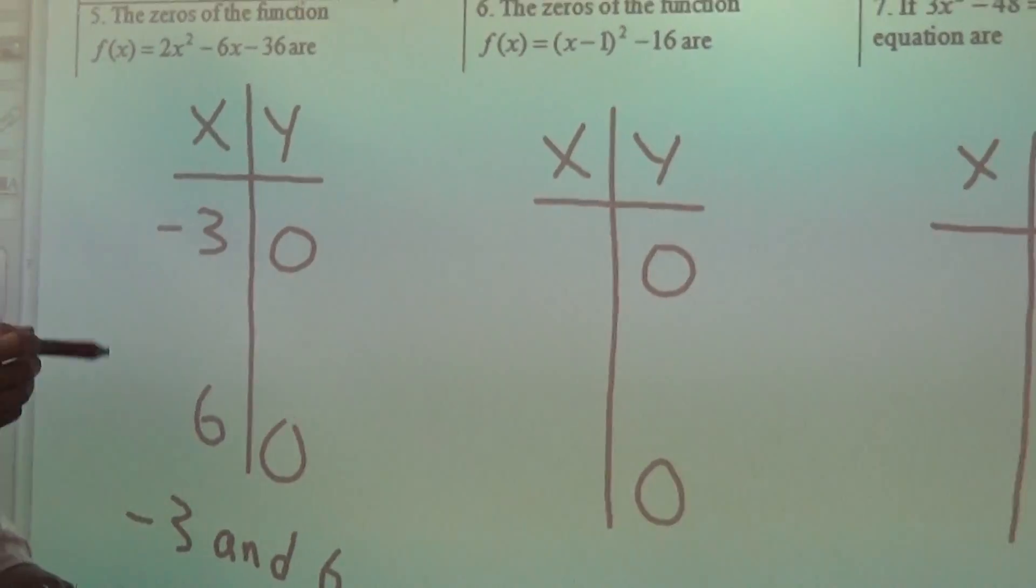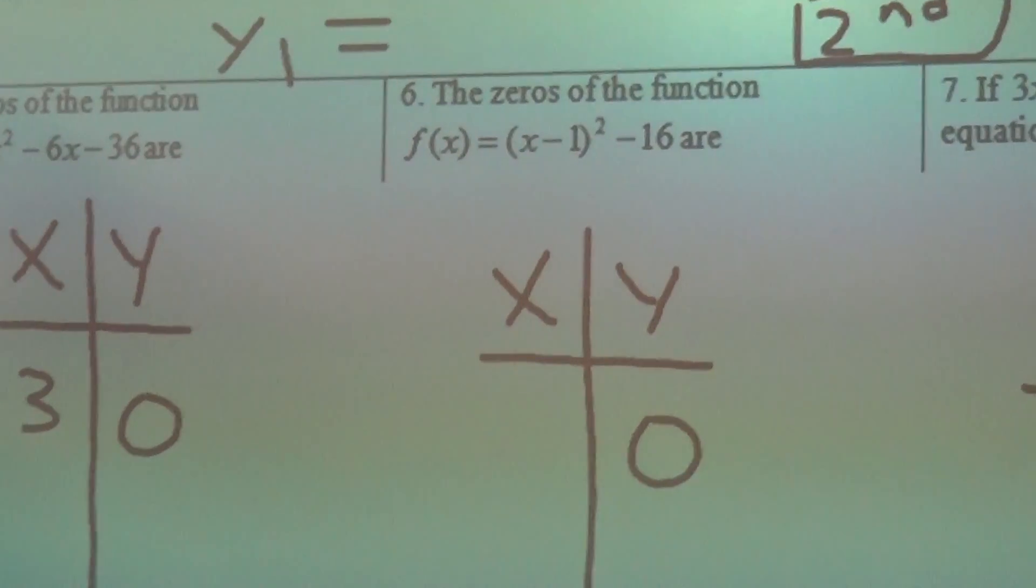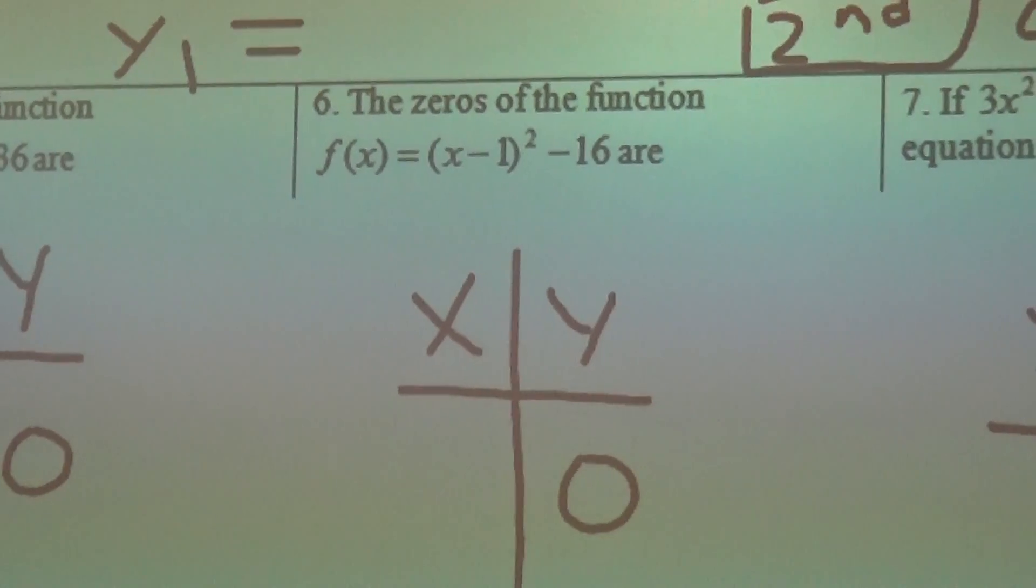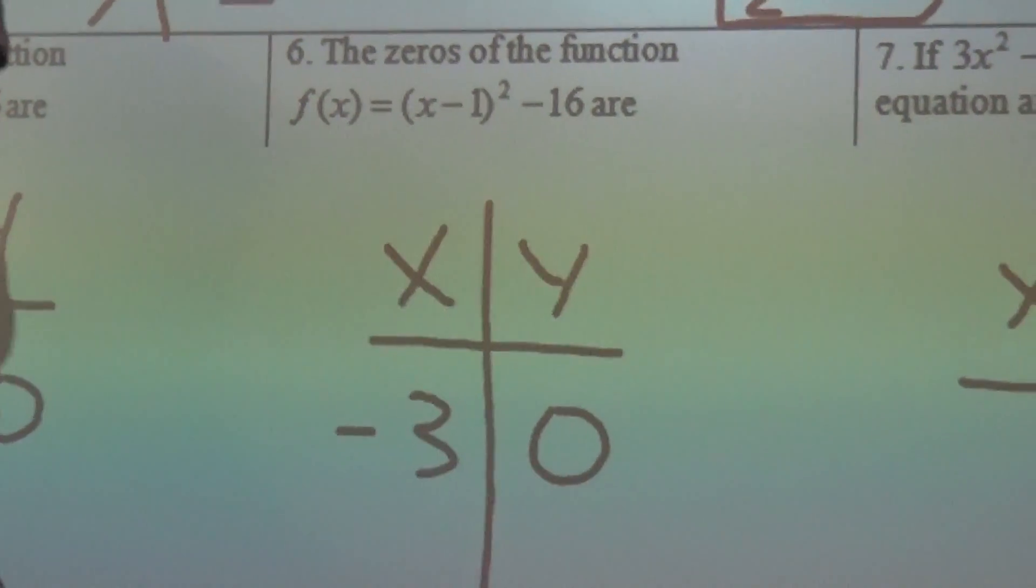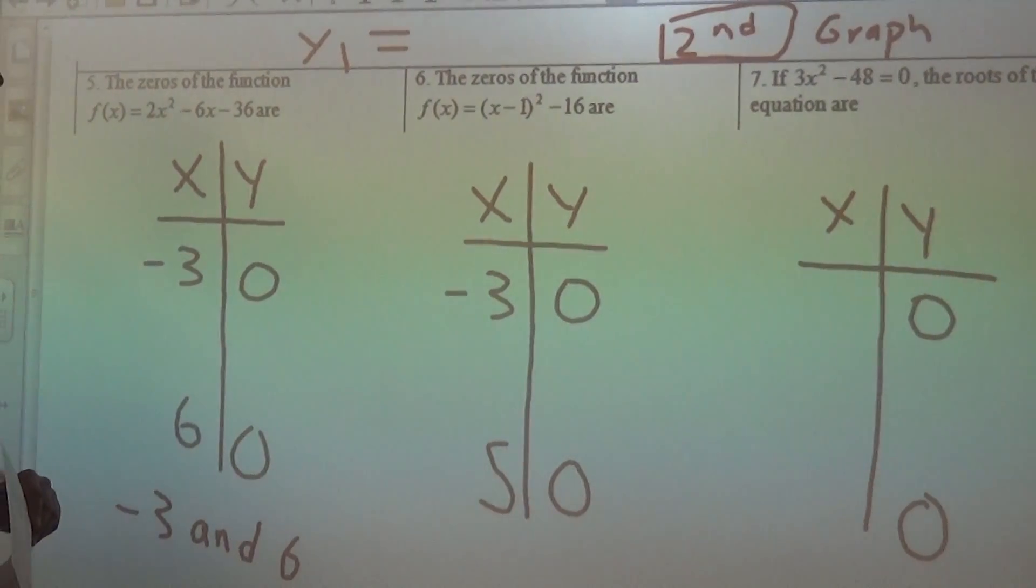We're going to do the same thing with number 6. So again, as you're going through this, you should pause it, and then you can check your answers as you go along with this. So number 6, we should find our zeros are negative 3 and positive 5.